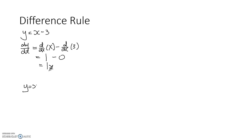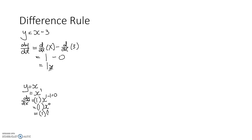Some of you may be wondering how I got 1 from x. If y equals x, this can be written as x to the power of 1. When you differentiate y with respect to x, first step from the power rule is to bring down the 1. The power is 1, and 1 minus 1 equals 0, so you get 1 times x to the power of 0. Anything to the power of 0 is 1 — you can verify this on your calculator — so 1 times 1 gives you 1. That is how we got that answer.